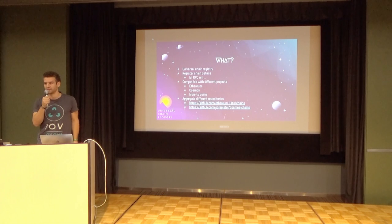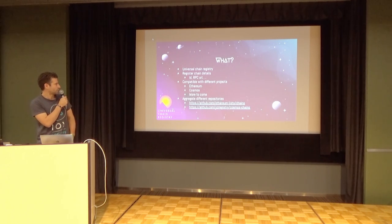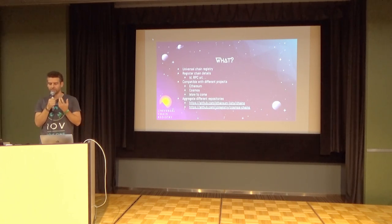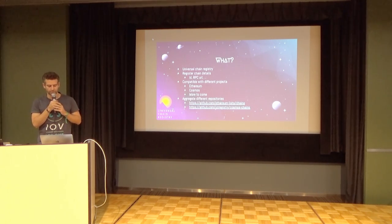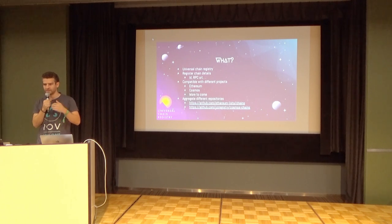So what is Universal ChainID? It's a GitHub repo you can check out — a UC registry. What we are doing there is technically trying to specify for each blockchain what kind of ID we could give to it. We work with Pedro Gomez, who did a great job for the Ethereum community, and we also work on the Cosmos community, which is going to have a lot of chains.